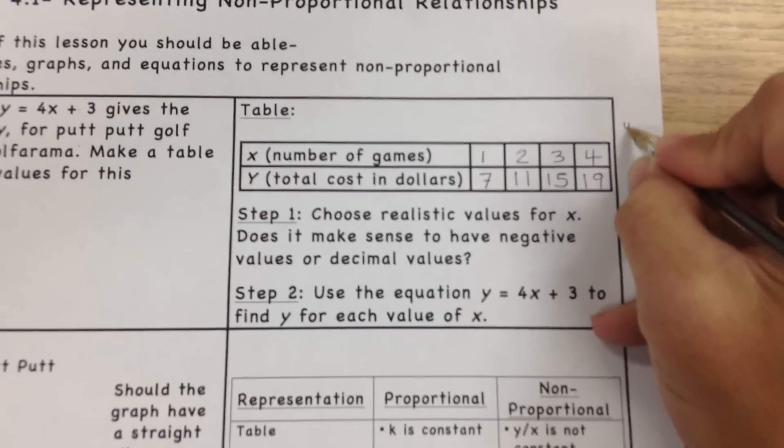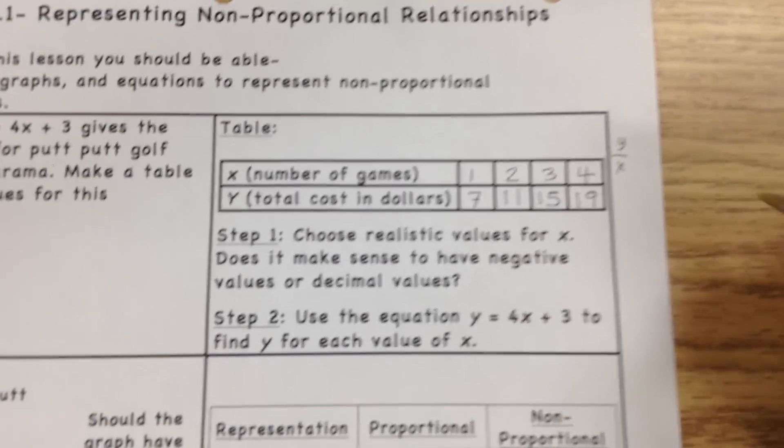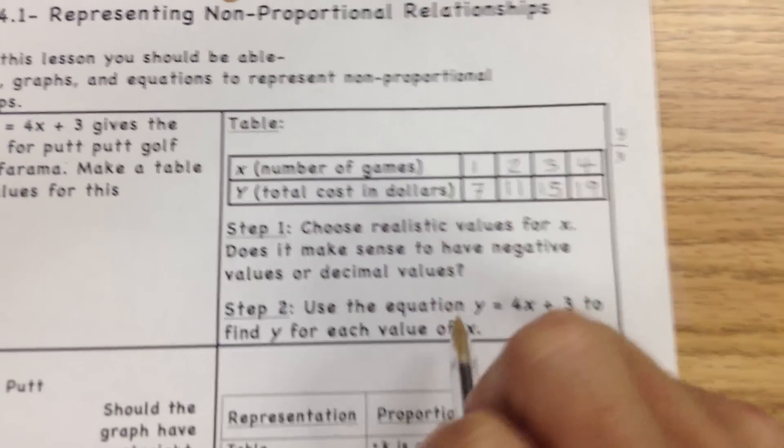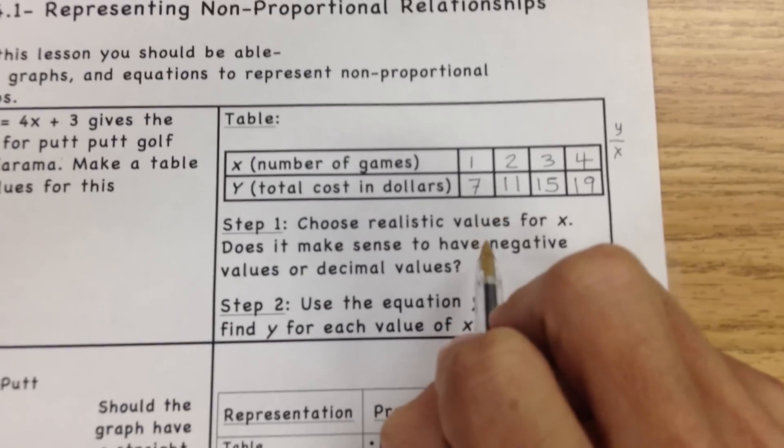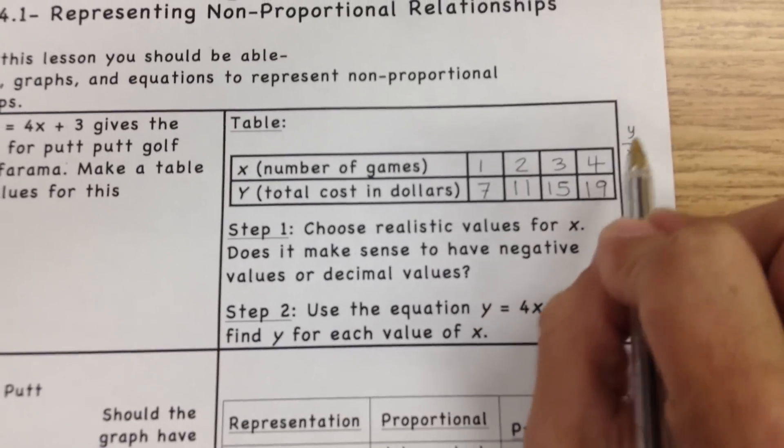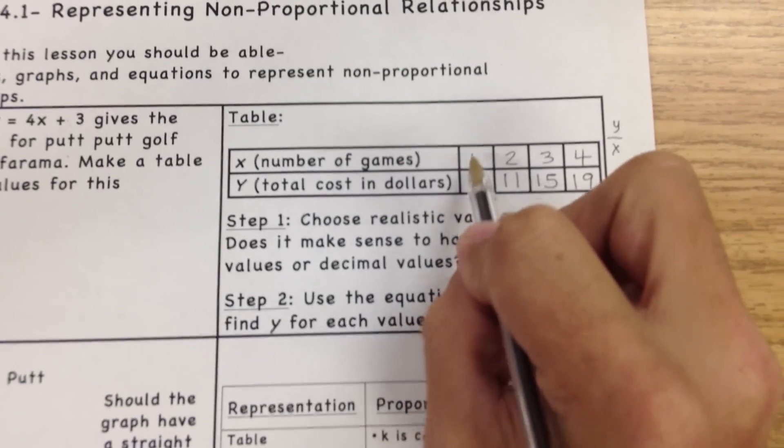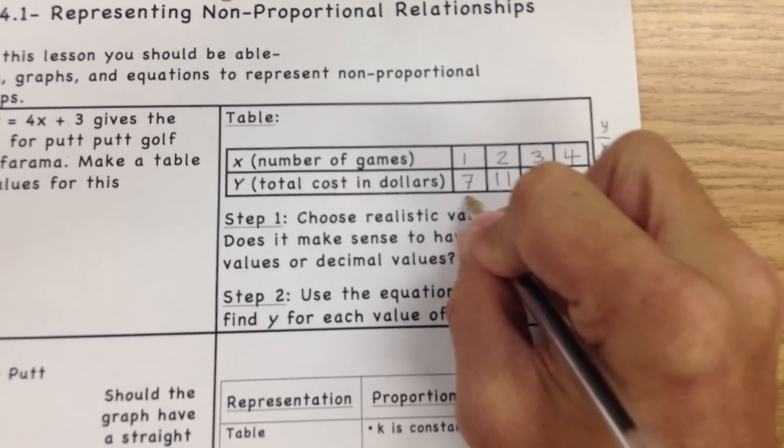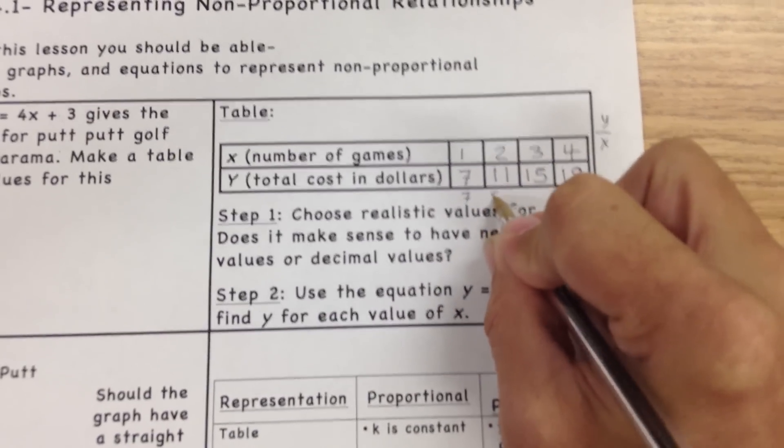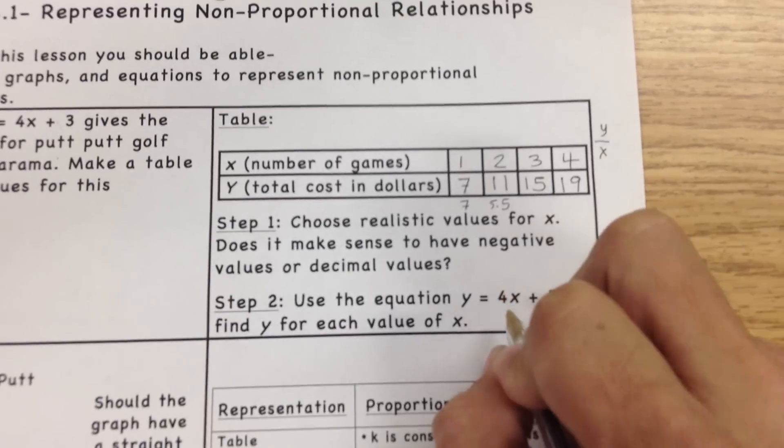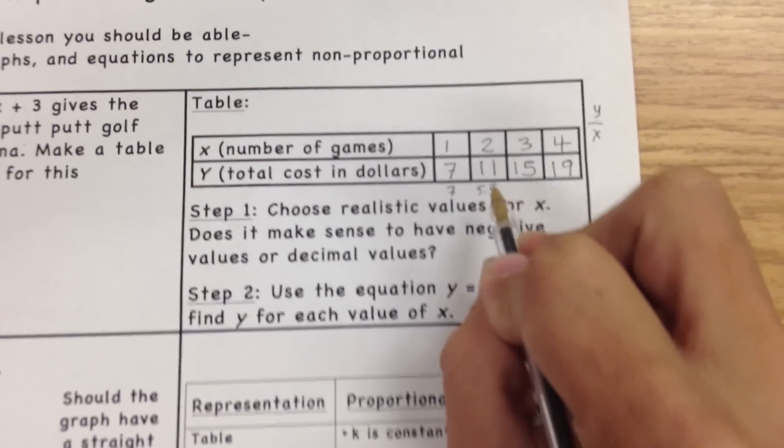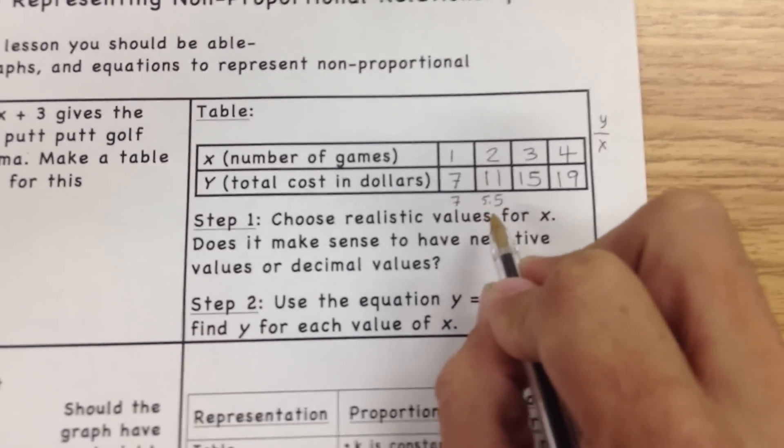We've talked about this a lot, y divided by x. Here's our y line, here's our x line. So we're going to find out whether this is proportional or non-proportional based on doing this problem. So 7 divided by 1 gives us an answer of 7. 11 divided by 2 gives us an answer of 5 and a half, 5.5. So at this point, since we've got different answers for each one of these, that tells us it's a non-proportional situation.